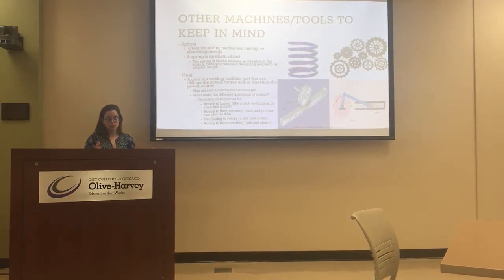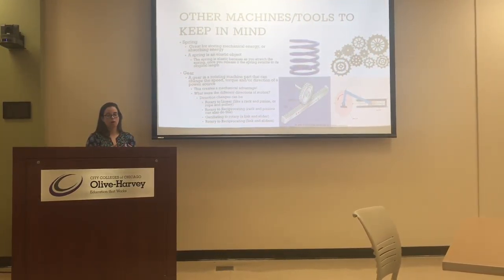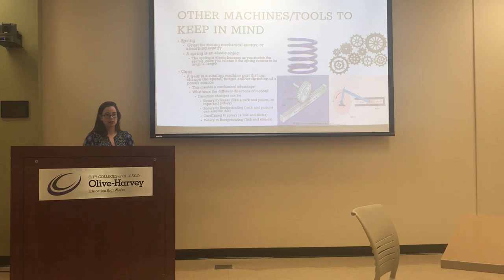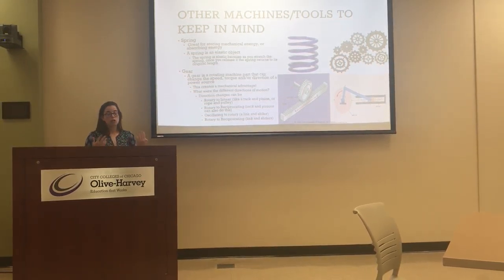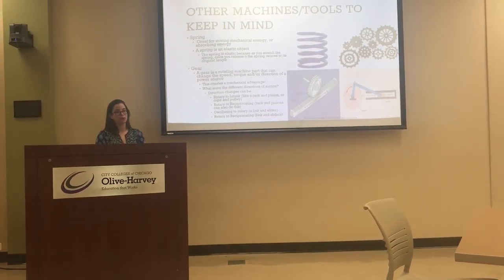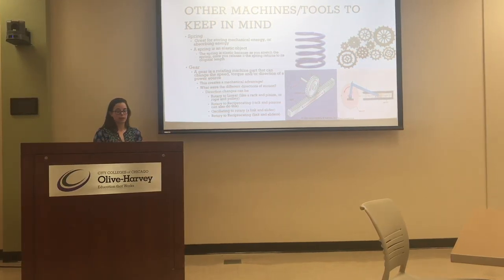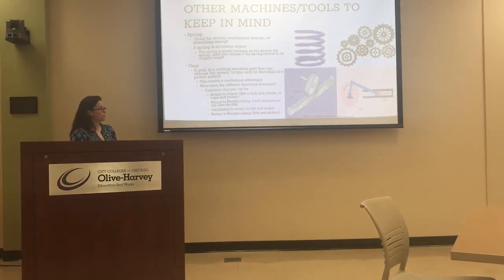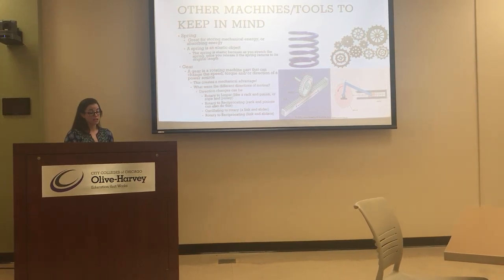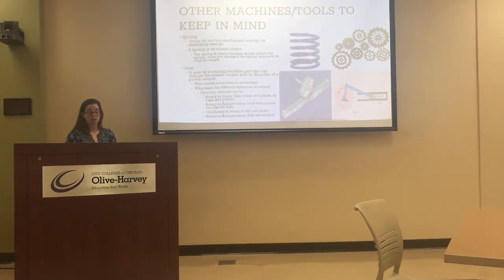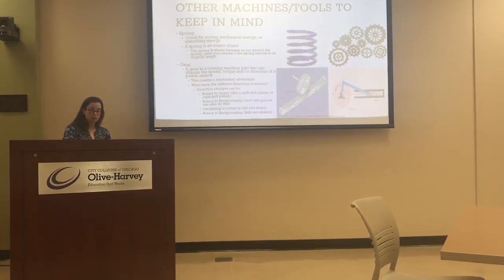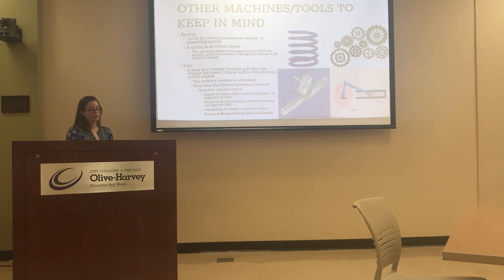Some of the different types of motion that we have were our rotary, our linear, our oscillating, and our reciprocating. Gears can help to change from, say, linear to rotary, or rotary to linear. Examples include rotary to linear like a rack and pinion or a pulley — the pulley is going in a circle, allowing for that linear motion.